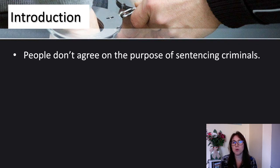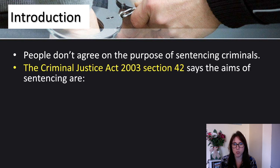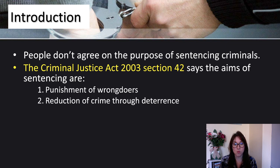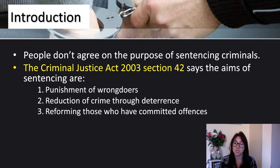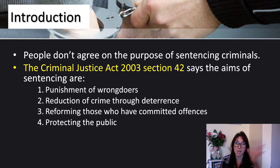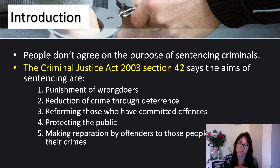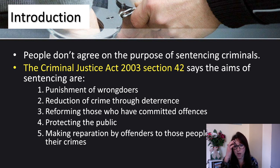People don't always agree on the purpose of sentencing criminals. The Criminal Justice Act of 2003, in section 42, says that the aims of sentencing are: punishment of wrongdoers; reduction of crime through deterrence — you are deterred from crime because of how you see someone else being treated; reforming those that have committed offences, helping them so they don't commit another crime; protecting the public by removing them from general society; and finally making reparation by offenders to those affected by their crimes — the idea that they need to repair the damage they have done.